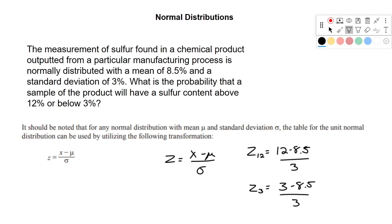So if we plug this into the calculator, 12 minus 8.5 divided by 3, we're going to get about 1.16. So we'll use 1.2. And then if we do 3 minus 8.5 divided by 3, we'll end up with negative 1.83, and we'll use approximately negative 1.8.